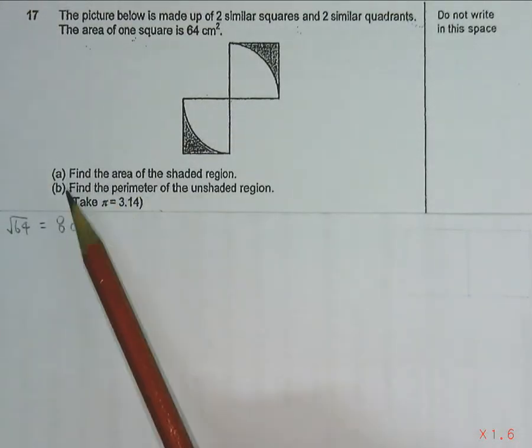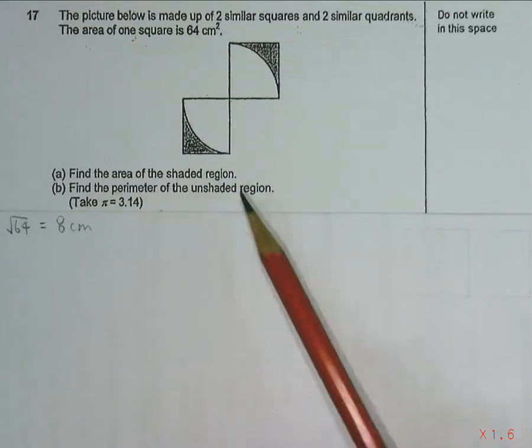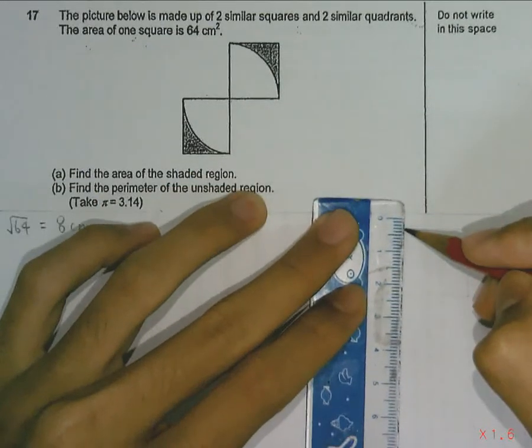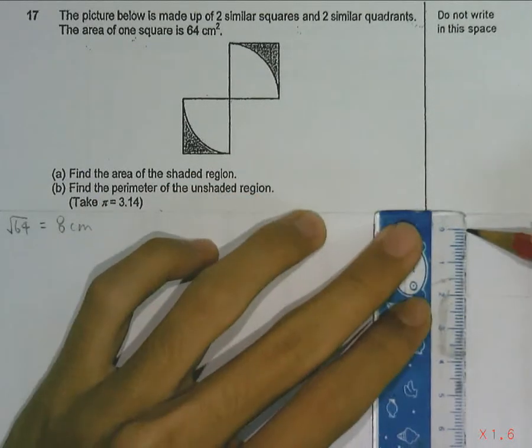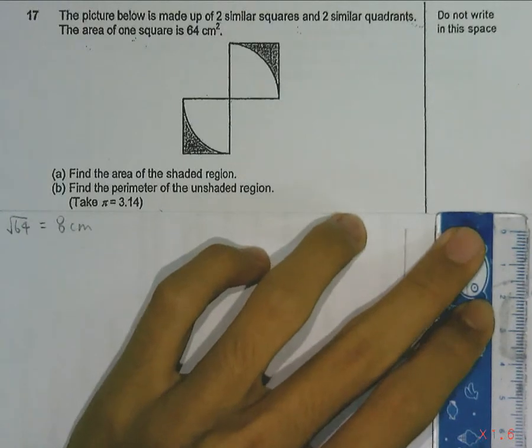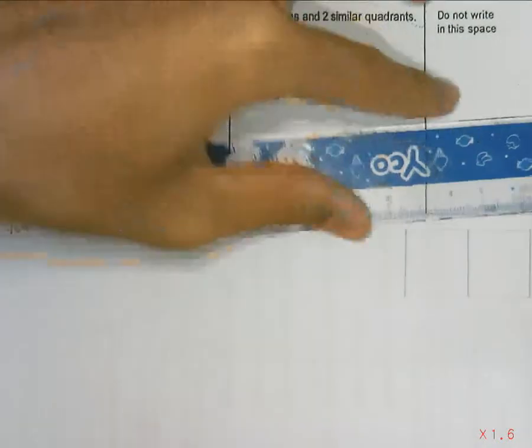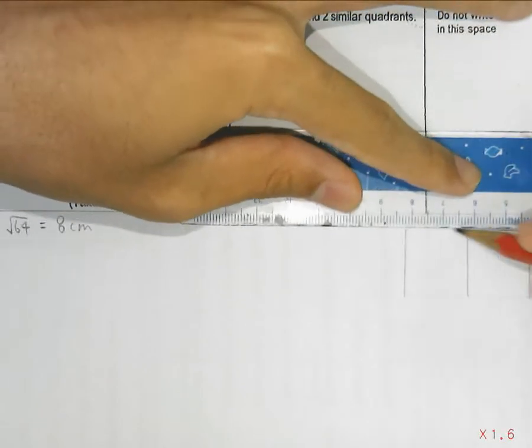And Part A asks us to find the area of the shaded region. So in order to do this, we can rearrange this diagram to help us find the answer more easily. By flipping this square upwards, we can get this rectangular shape.